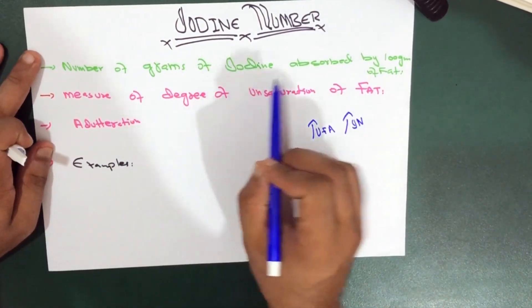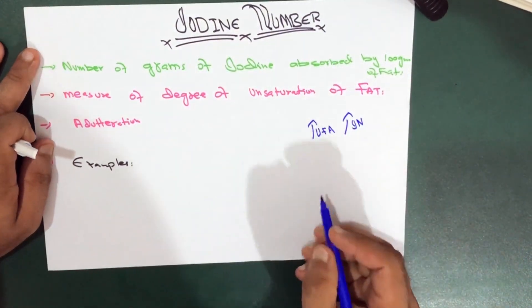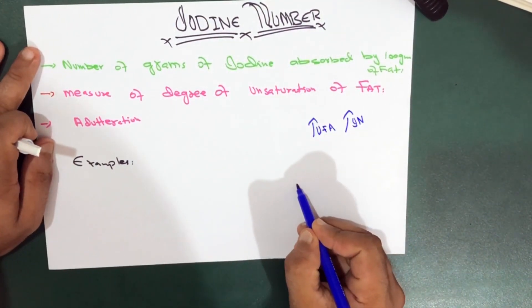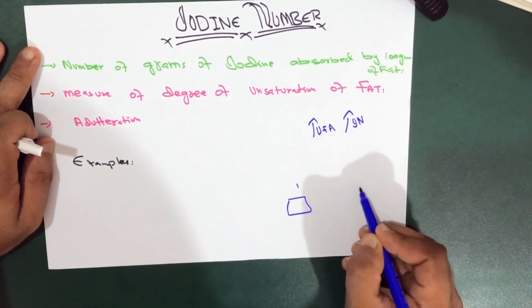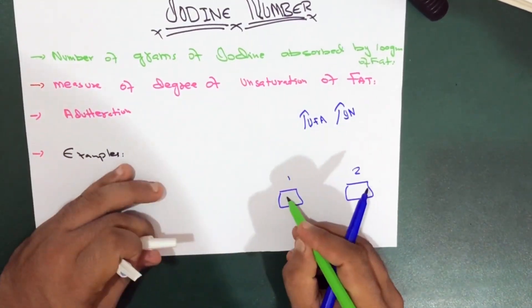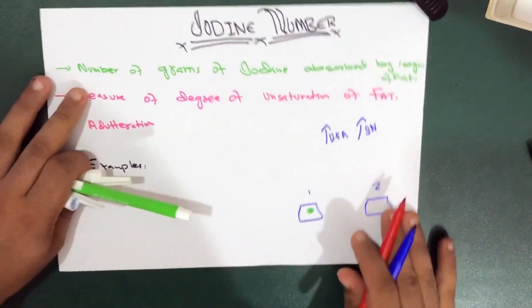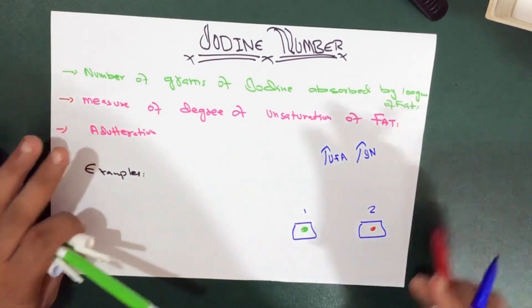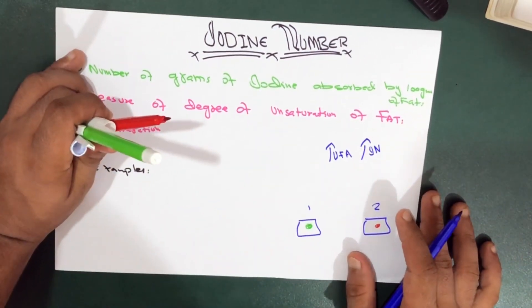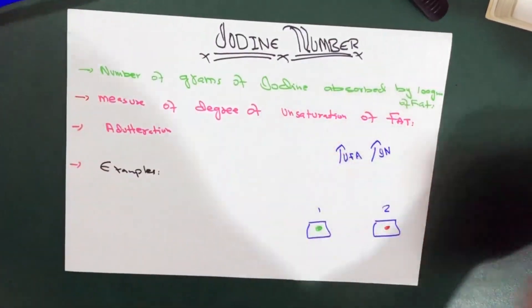Again, the number of grams of iodine absorbed by 100 grams of fat. For example, if you're taking two fats, you got one fat over here in this box and a second box here. Consider that we put iodine in both of them, introducing iodine.